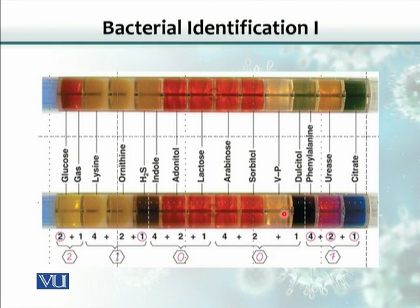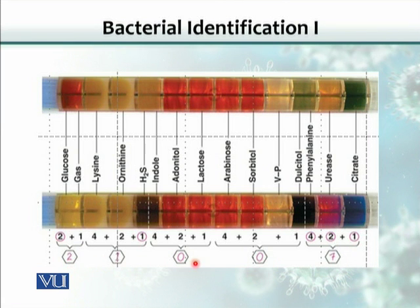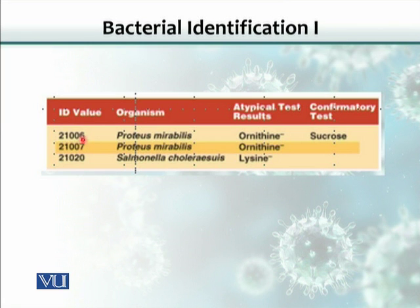Here is a slightly larger view — this organism is fermenting and utilizing citrate, also producing urea, and is able to utilize phenylalanine as a substrate. All these numbers are added to generate a code: 4 plus 2 plus 1 creates 7, giving a code that reads 2-1-0-0-7. The company provides a chart where this code matches with Proteus mirabilis. That is how we identify the organism.